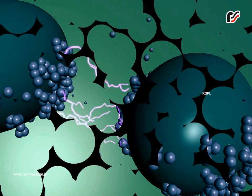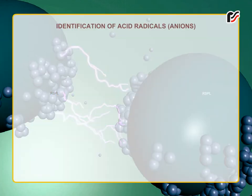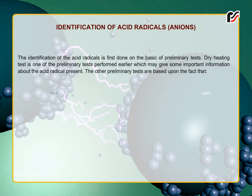Identification of Acid Radicals (Anions). The identification of the acid radicals is first done on the basis of preliminary tests. The dry heating test is one of the preliminary tests performed earlier, which may give some important information about the acid radical present. The other preliminary tests are based upon the fact that certain acid radicals react characteristically with acids.